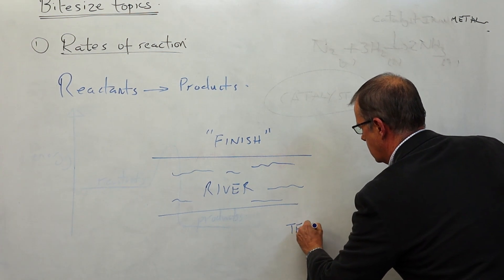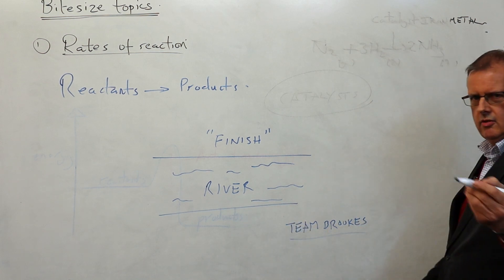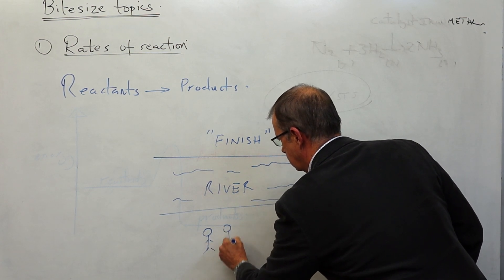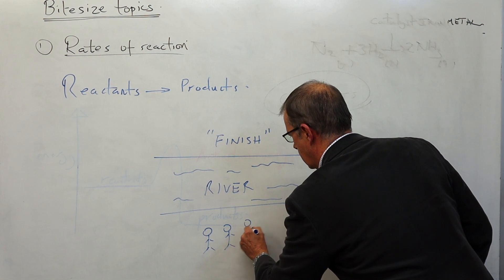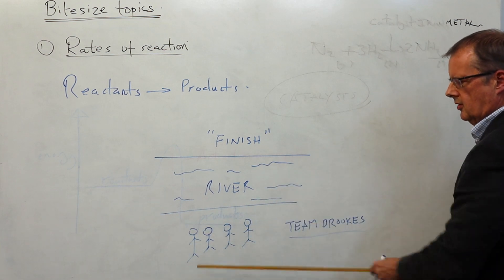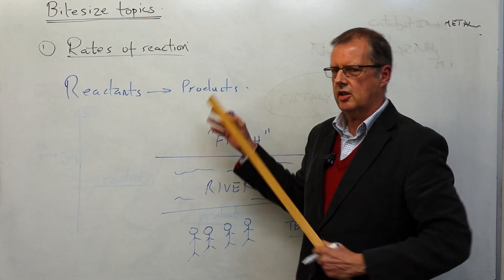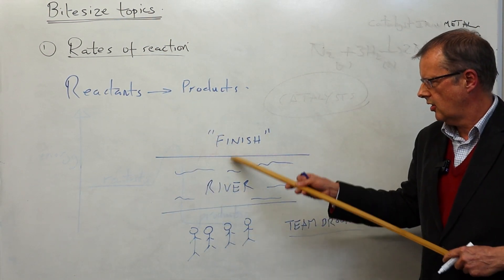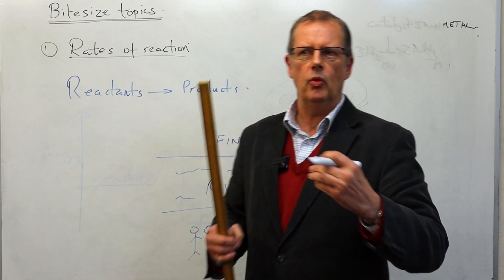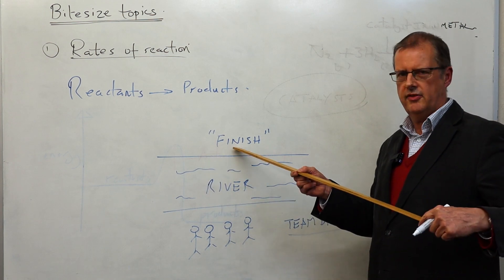Team Brooks — these are energetic students who are stood over on one side. They've got to get from this side of the river over to the other side. So you can imagine that a bit like reactants going to products. To swim across uses lots and lots of energy, and that is what the reaction would be like without a catalyst — it uses lots and lots of energy to get across to the finish.